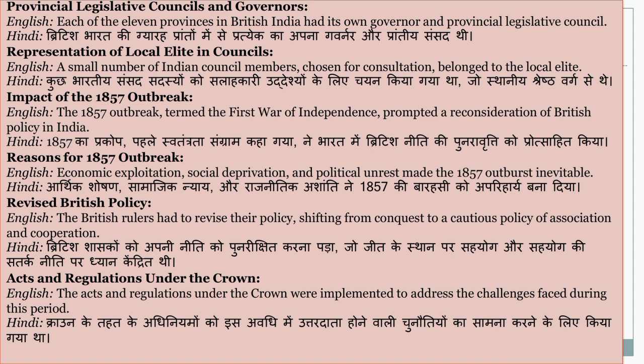Economic exploitation, social deprivation, and political unrest made the 1857 outburst inevitable. Aarthik shoshan, samajik nyaya aur rajnitik ashanti ne 1857 ki barasi ko aparihariya bana diya. The British rulers had to revise their policy, shifting from conquest to a cautious policy of association and cooperation. British shasako ko apni niti ko punarikshit karna pada, jo jeet ke sthan par sahayog aur sahayog ki satak niti par dhyan kendrit kiya. The acts and regulations under the crown were implemented to address the challenges faced during this period.